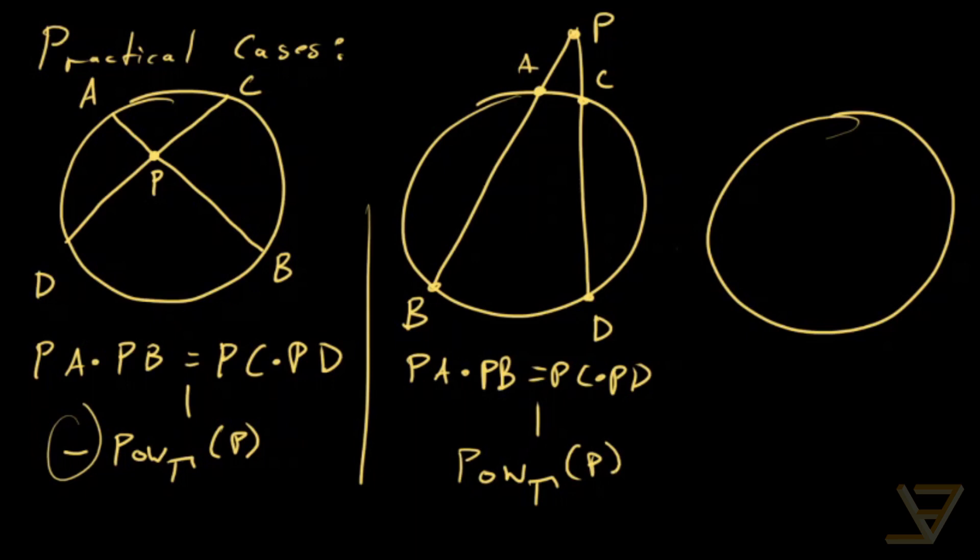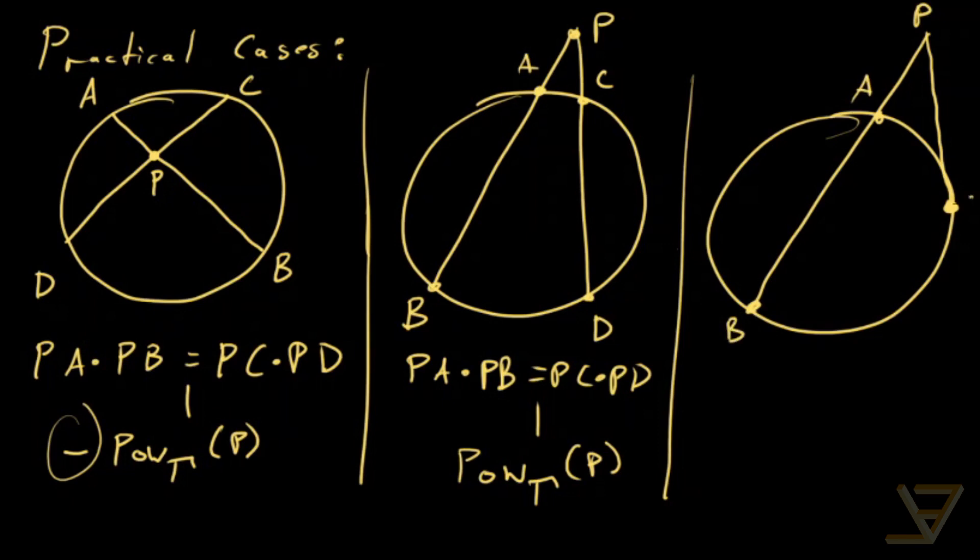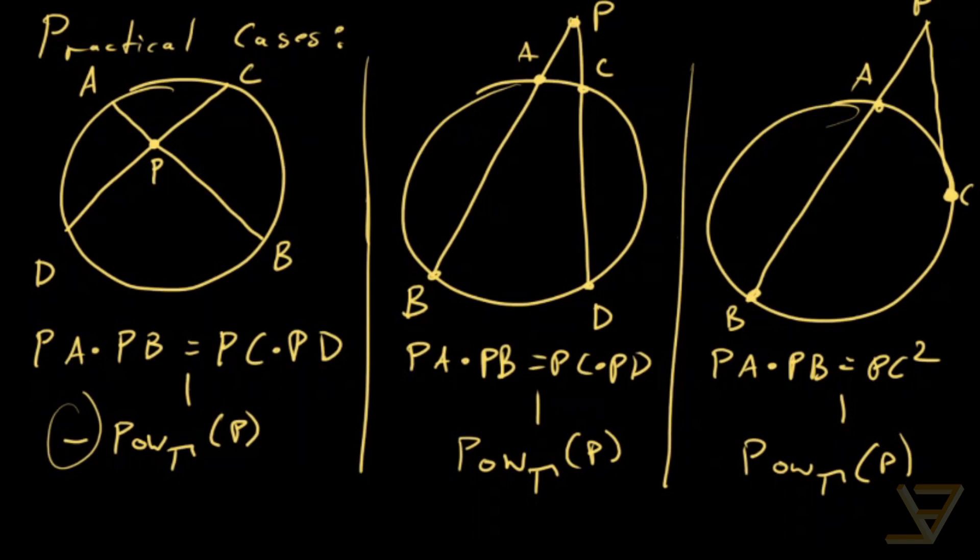And the final case that we have is where we have one secant and the other is a tangent. So we're going to call this P, A, B, and C. And what we have is PA times PB is equal to PC squared. And once again the common value is the power with respect to gamma of P. So those are the cases that come up in practice of the power of a point theorem.